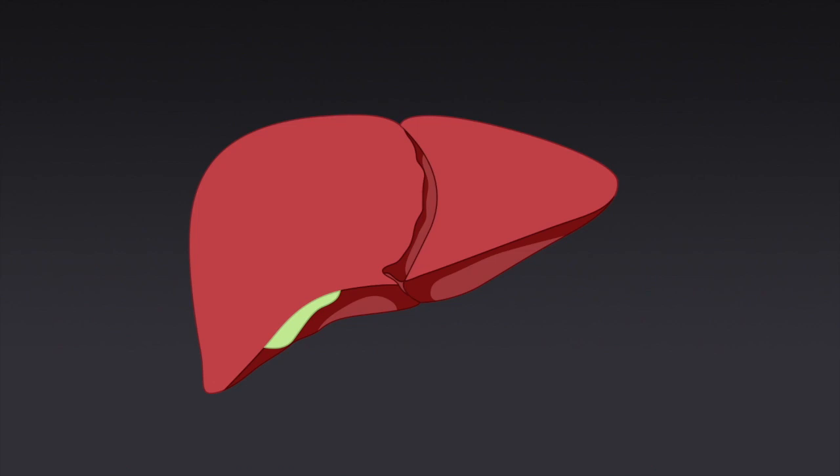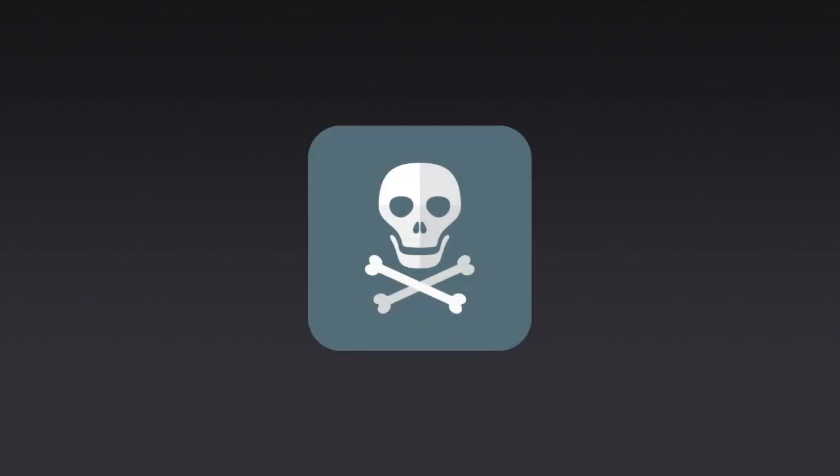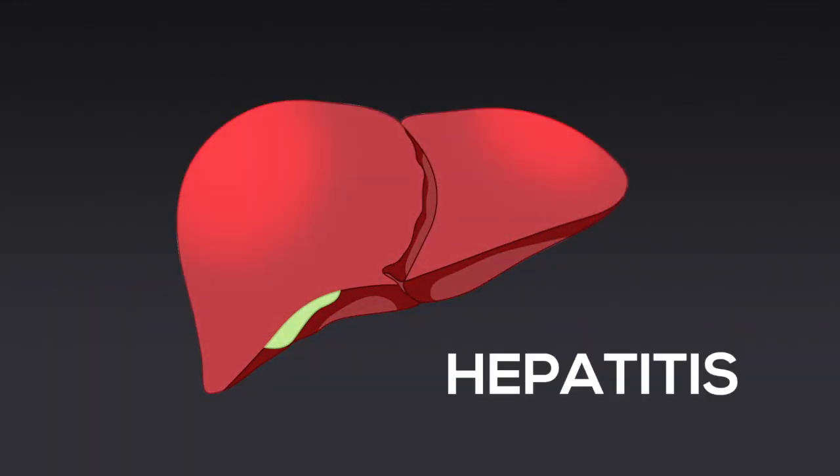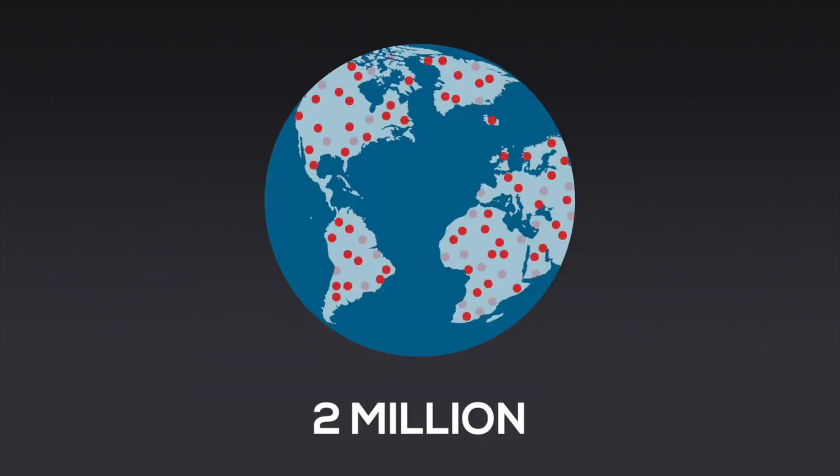However, the liver can get damaged by infections, disease, alcohol, and toxic substances. This condition is called hepatitis. Throughout the world, 2 million people die of liver disease every year. Let's ask Dr. Smart about it.